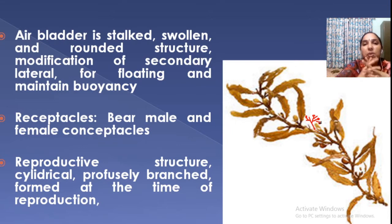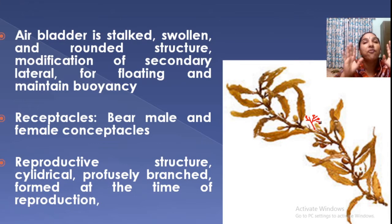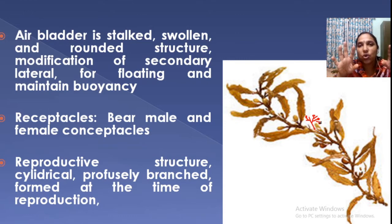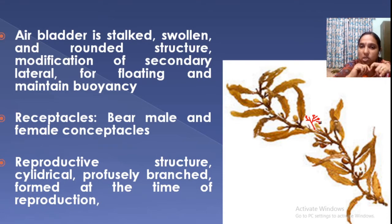These conceptacles are produced at the time of reproduction. The male conceptacle bears the male reproductive part, antheridia, and the female conceptacle bears the female reproductive part, oogonia. So the main axis has primary and secondary laterals, air bladders, and receptacles — which bear conceptacles.